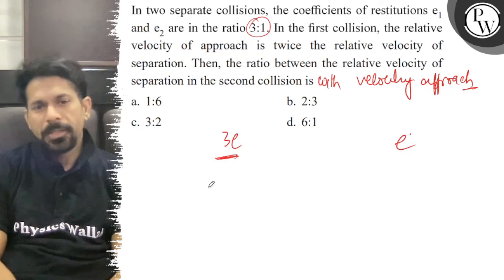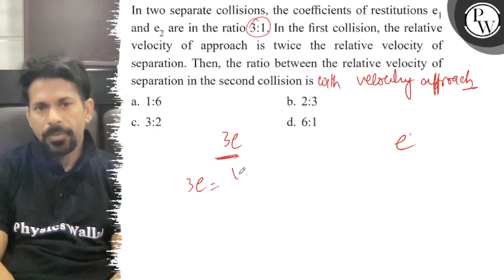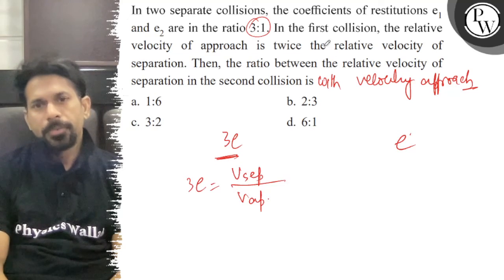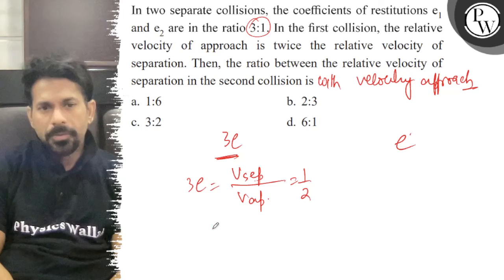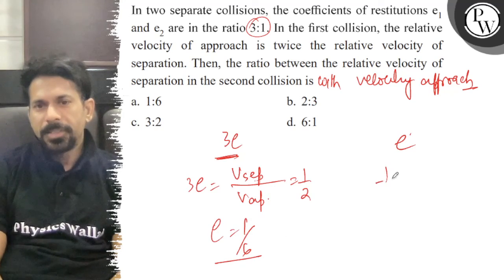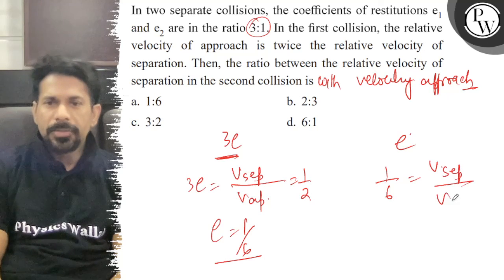So we have 3e is equal to velocity of separation divided by velocity of approach. In the question, the velocity of approach is twice the velocity of separation, so e's value is 1/6. Therefore, 1/6 is equal to velocity of separation divided by velocity of approach.